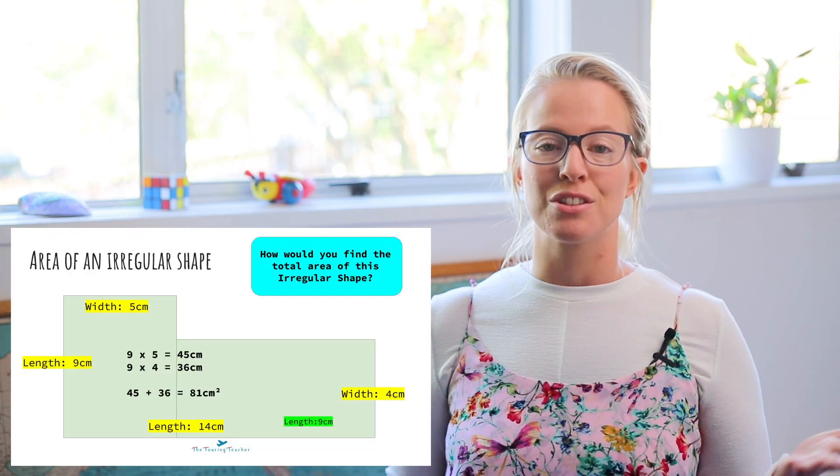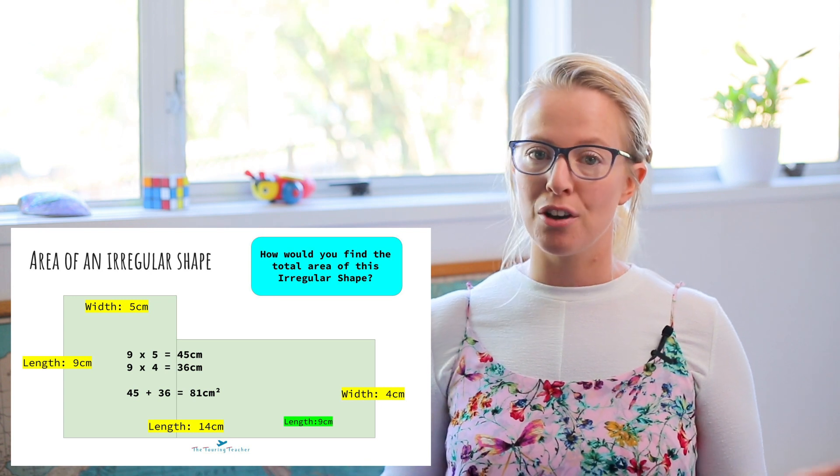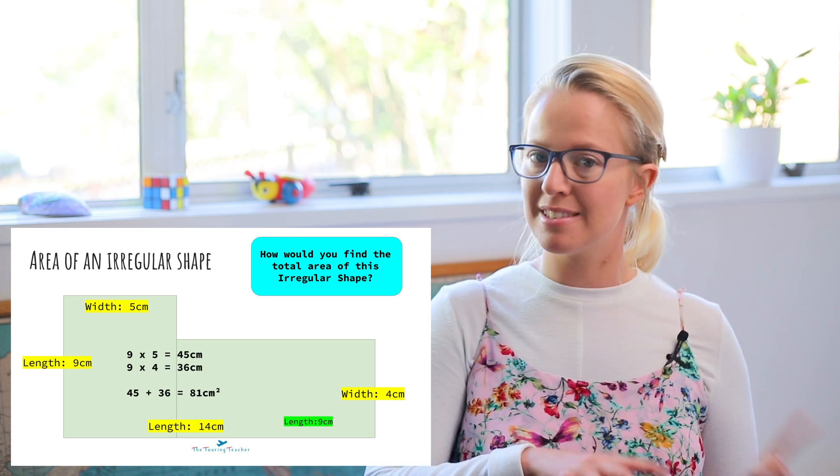That one was a bit tricky, so hopefully you were able to follow along. If not, you can go back and practice the other ones, and you can come back and try this one again. What I'm going to do now is leave you with some more activities of these irregular shapes that you can try and figure out yourselves. If you need to, go back in the video and listen to my explanation again — that can help you through. For all these irregular shapes, you need to try and divide them into two rectangles, find the area, and add those together. The answers will come up afterwards so you can check if you got it right.